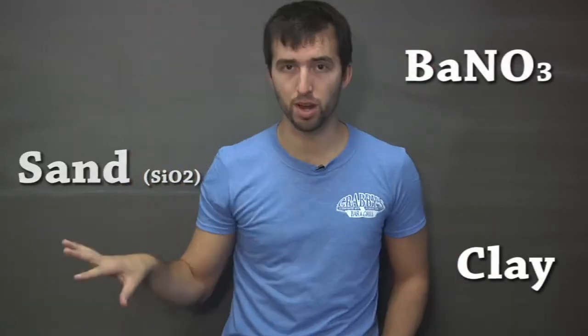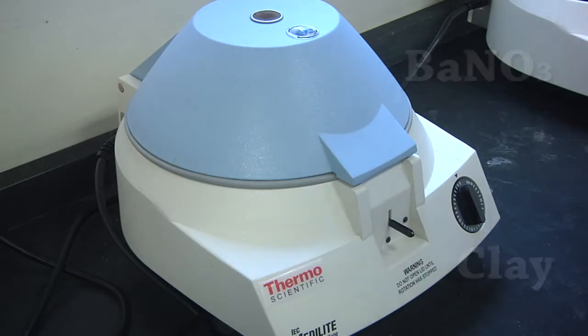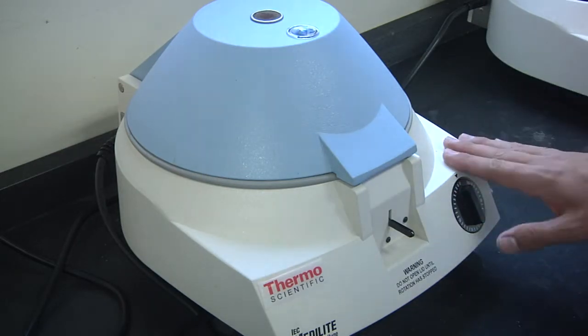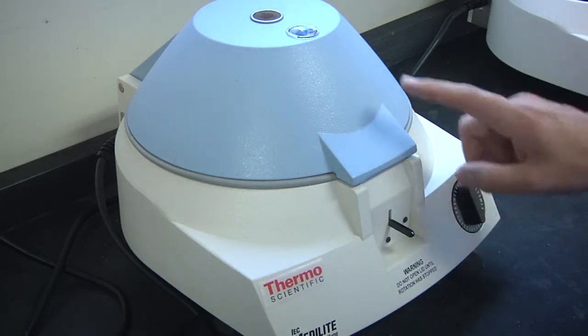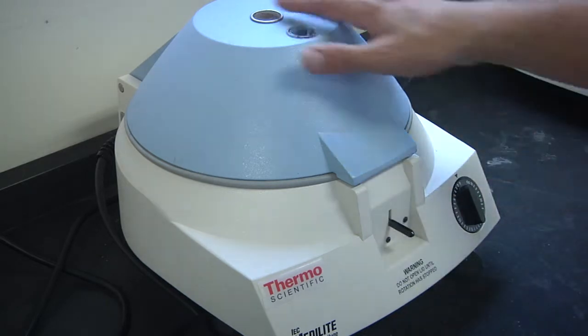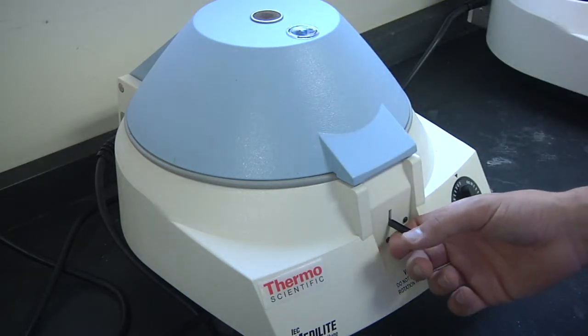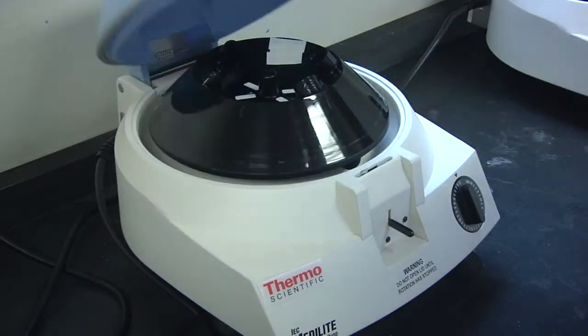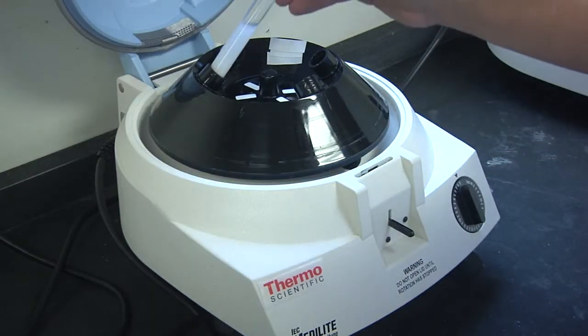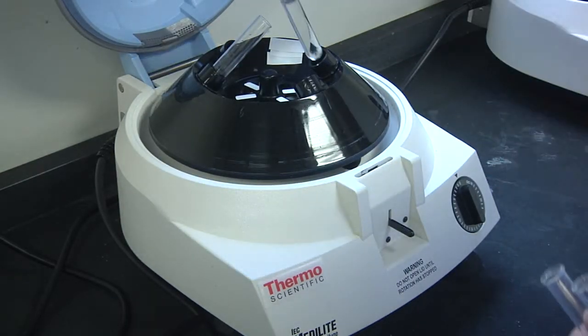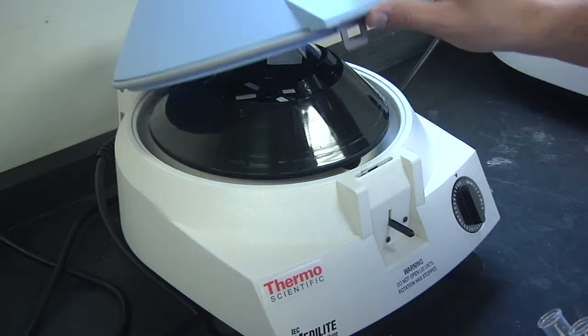Before using the centrifuge, we have to learn some basic rules about it. The first thing is: never open the lid until the rotation has stopped. To open the lid, merely pull up on this lever and open the hatch. You can insert your sample into one of these holes, but you have to be careful that you can actually close the lid. In this example, we cannot close the lid.